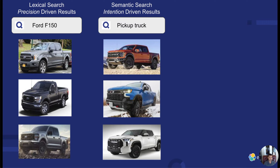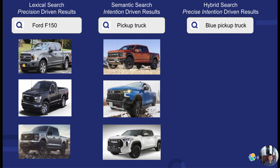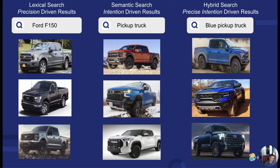Semantic search is also known as vector search. However, if I want the engine to do both — a hybrid approach — that's essentially 'blue pickup truck.' Blue is highly precise, and 'pickup truck' is where I want to interpret my intention. In this scenario, what I call precise intention-driven results, it'll return blue pickup trucks. It interprets the pickup truck side but gives me only blue, which is incredibly important. We live in the world of AND, not OR, within Elastic.